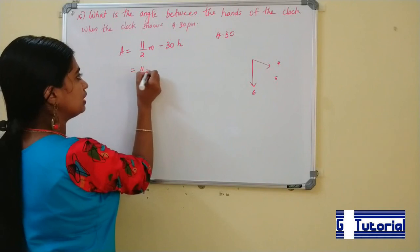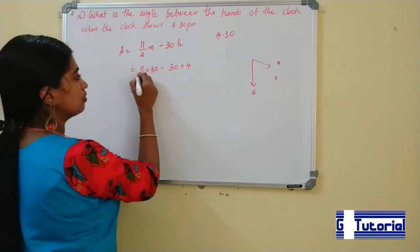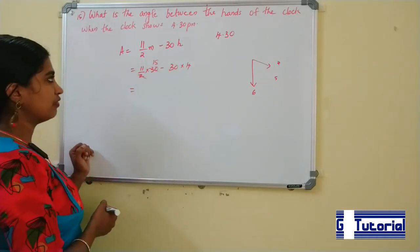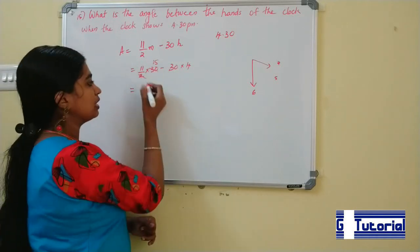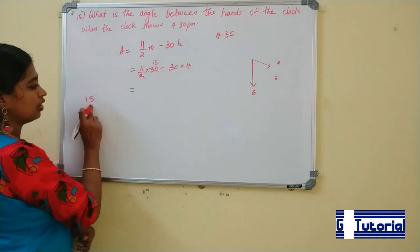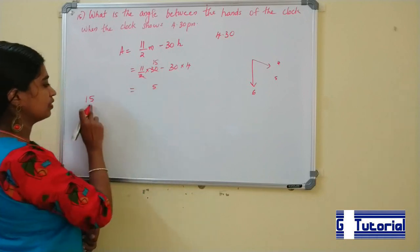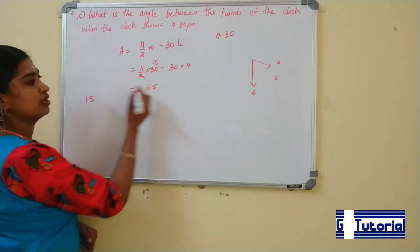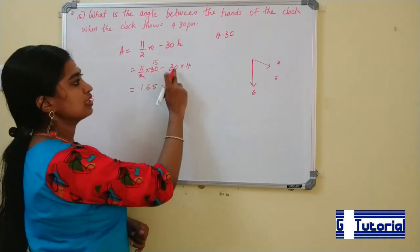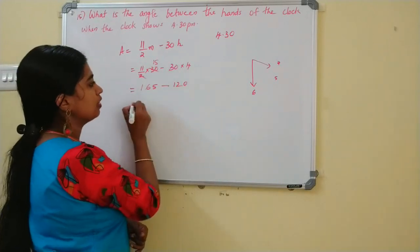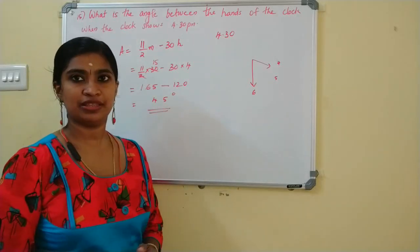Using the formula: 11/2 × m − 30 × h, where m = 30 minutes and h = 4 hours. So: 11/2 × 30 − 30 × 4 = 165 − 120 = 45. Wait — let's recalculate: 11 × 30 / 2 = 165, and 30 × 4 = 120. 165 − 120 = 45 degrees. So the angle between the clock hands at 4:30 PM is 45 degrees.